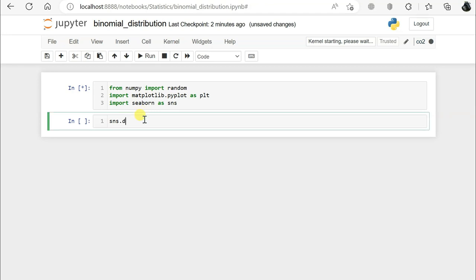SNS.distplot stands for distribution plot. Random.binomial is a method we are calling here. We have to give three parameters: n is the number of trials, I want to do 10; p is the probability of each distribution, so if I'm flipping a coin, the probability will be 0.5 for head, 0.5 for tail. I also want to give the size as 10. We have to give histogram equals true and kde equals false.